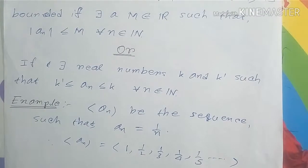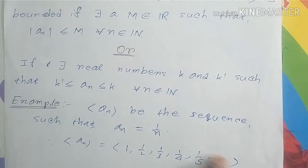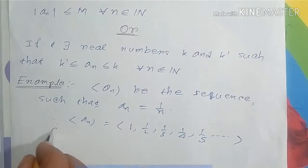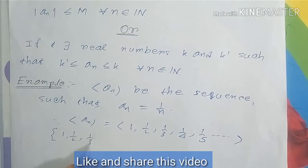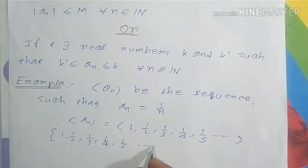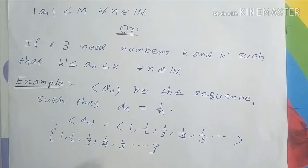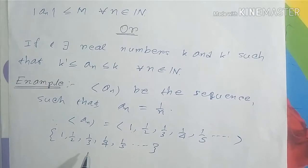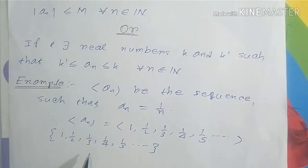If all elements of the range set of sequence a_n are less than one real number, then we can conclude that the sequence a_n is bounded. So the sequence a_n = 1/n is a bounded sequence, since its range set is bounded and all elements are less than one.